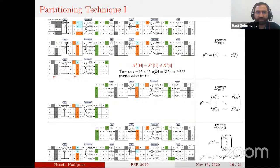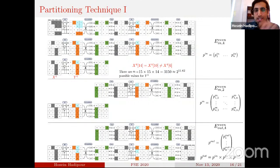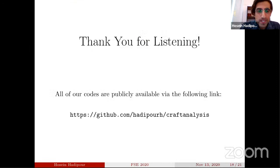Assuming CRAFT is a Markov cipher, the total probability is computed by multiplying these matrices. All codes are publicly available. Thank you for listening.